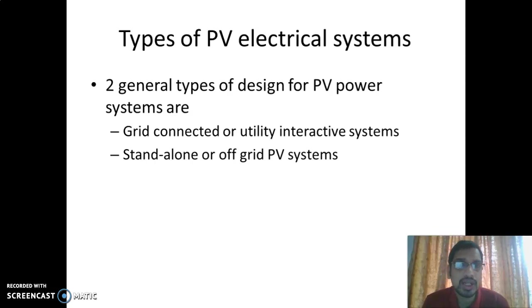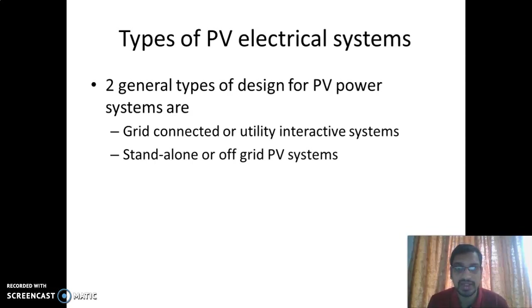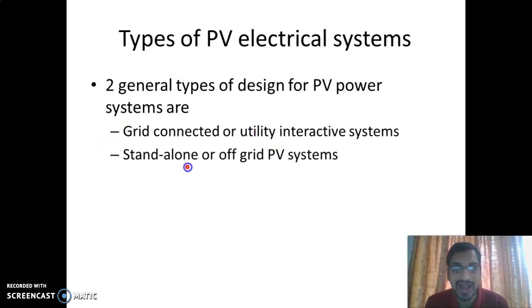There are two types of PV systems in a domestic building. The first one is grid-connected, also called a utility interactive system. The second one is a stand-alone or off-grid PV system.